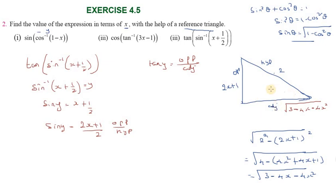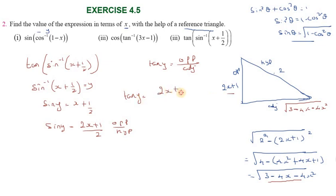For tan y we need opposite side over adjacent side. The adjacent side equals square root of hypotenuse squared minus opposite side squared, which is square root of 4 minus (2x plus 1) squared. Expanding: 4 minus (4x squared plus 4x plus 1) equals 3 minus 4x minus 4x squared. Therefore tan y equals (2x plus 1) over square root of 3 minus 4x minus 4x squared. Thank you friends.